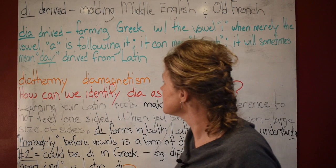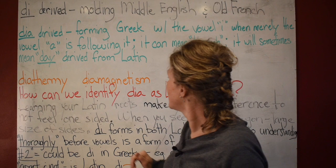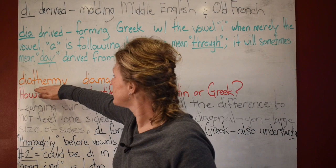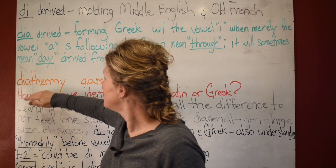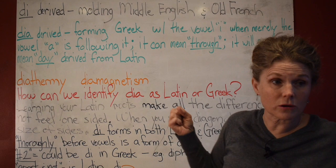Here are some examples: diathermy, diamagnetism. 'Therm' means heat, so diathermy means heat through. Now, how can we identify 'dia' as Greek or Latin?